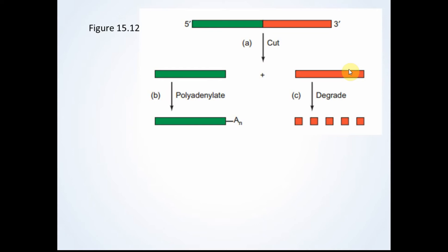First, transcription occurs and continues past the poly-A site. In this figure, the poly-A site is somewhere around where the green and the red meet. Next, the poly-A site is recognized and cleavage of transcription occurs. This cleavage can happen even if the red section is still being elongated.